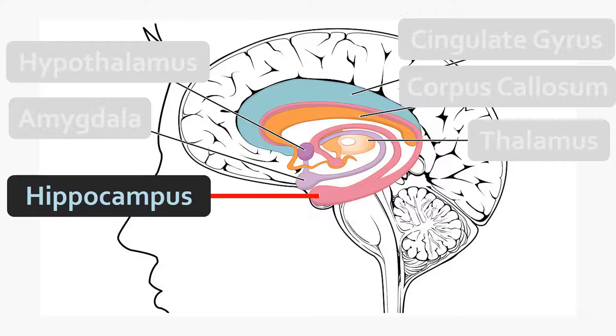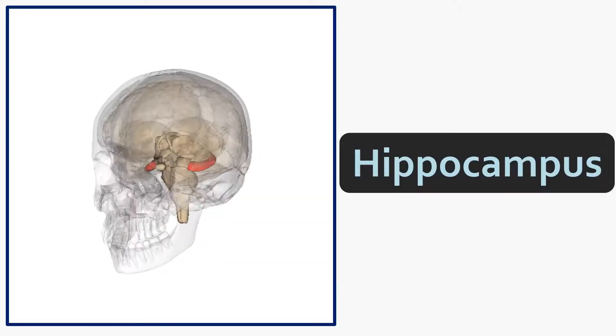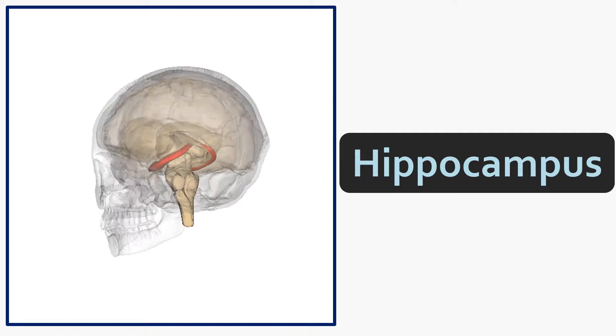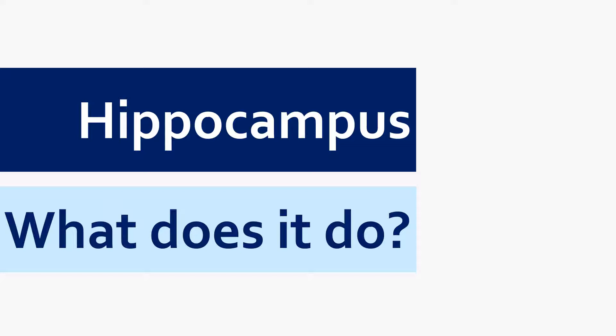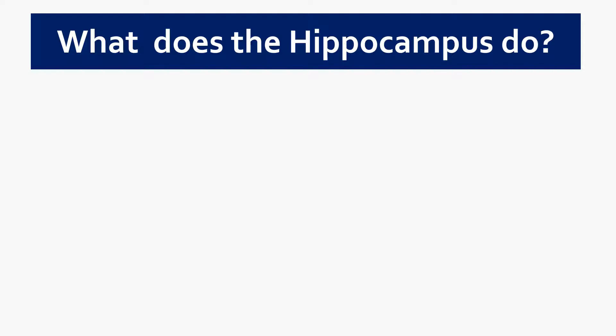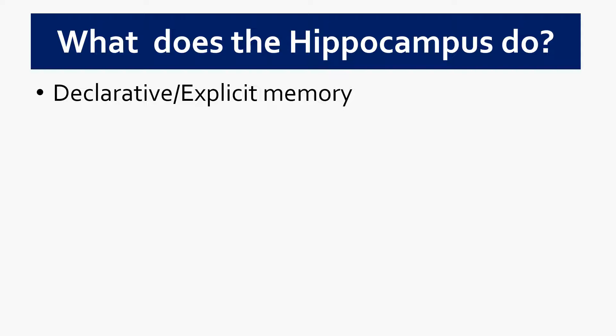Let's talk in more detail about the hippocampus. If we had to sum up what it does in one word, that word would be memory. The hippocampus comprises many different sub-regions doing slightly different things, and even together it isn't solely responsible for learning and memory — lots of other brain regions contribute. But the hippocampus is fundamental to memory, and in particular to declarative or explicit memory.